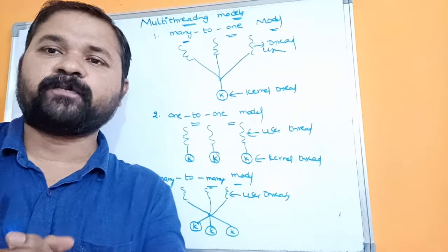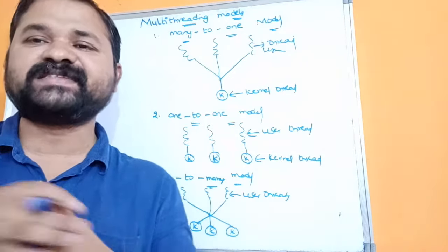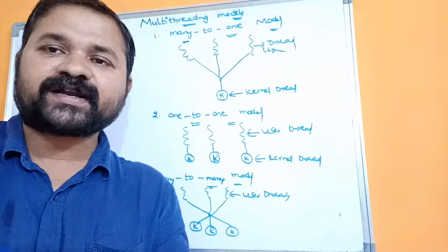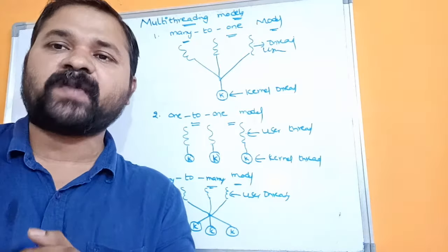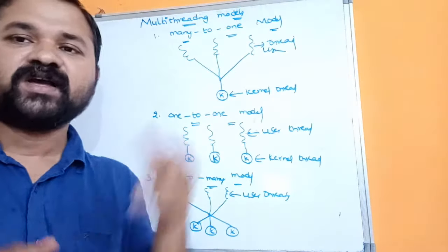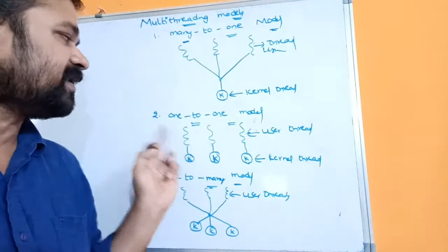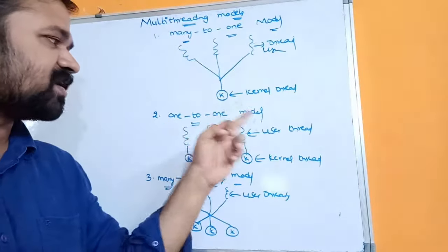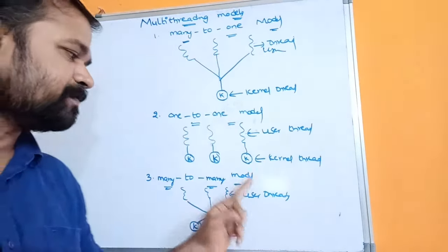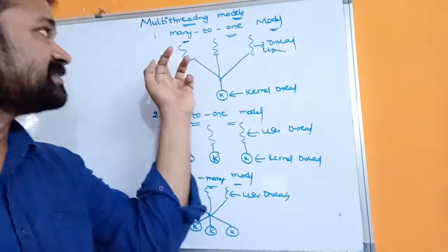Now let's see about multi-threading models in operating systems. Mainly there are three types of multi-threading models available: first, the many-to-one model; second, the one-to-one model; and third, the many-to-many model.